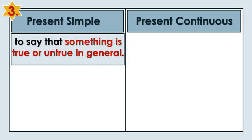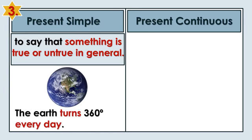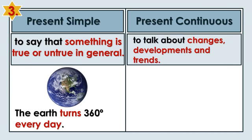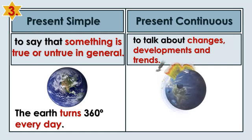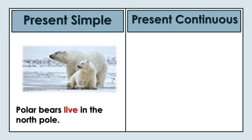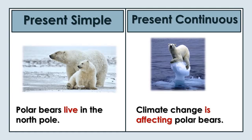We use the Present Simple to say that something is true or untrue in general. The earth turns 360 degrees every day. We use the Present Continuous to talk about changes, developments, and trends. The earth is changing due to global warming. Polar bears live in the North Pole. Climate change is affecting polar bears.